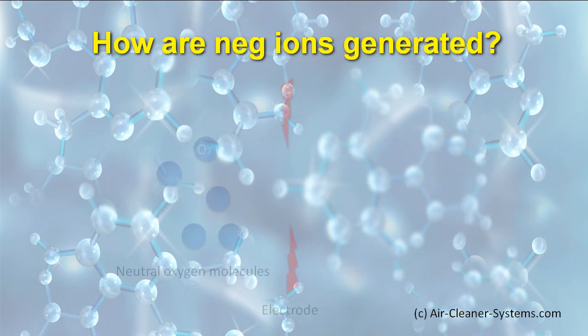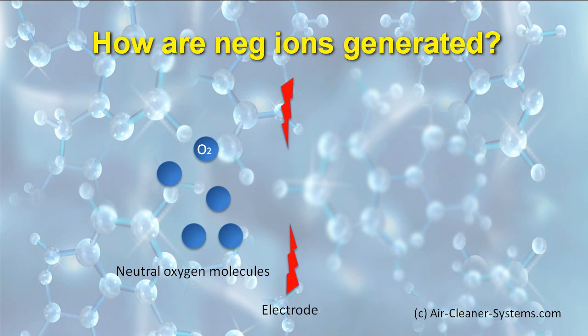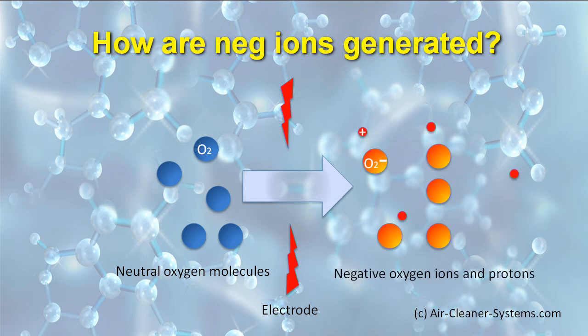How are negative ions formed? When oxygen molecules, which have a neutral charge, get treated by a negative electrode, they break apart forming negatively charged ions and positively charged protons.